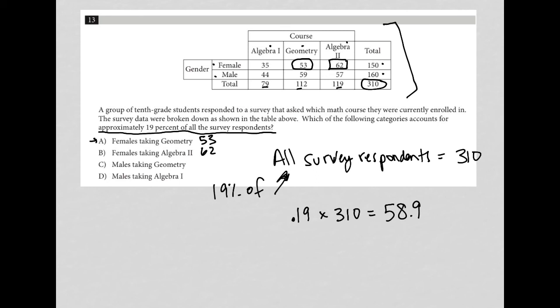Males taking geometry, that would be here. That's 59. And males taking algebra 1, that would be here. And that is 44.